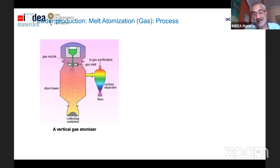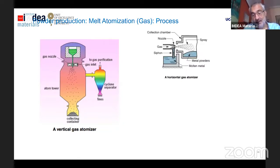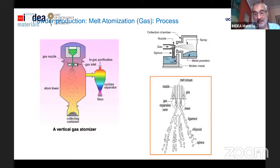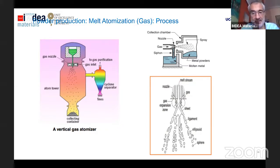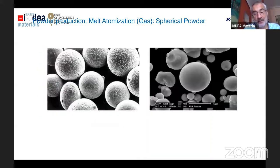We can also atomize by gas. By gas atomization, we use a gas instead of water to atomize the melted droplets. The advantage over water atomization includes better control of chemical composition; there is no oxidation in principle, protecting the material. For materials with high affinity for oxygen, this is a much better process. At the end, we have a fully spherical particle, similar to carbonyl iron in terms of roundness.